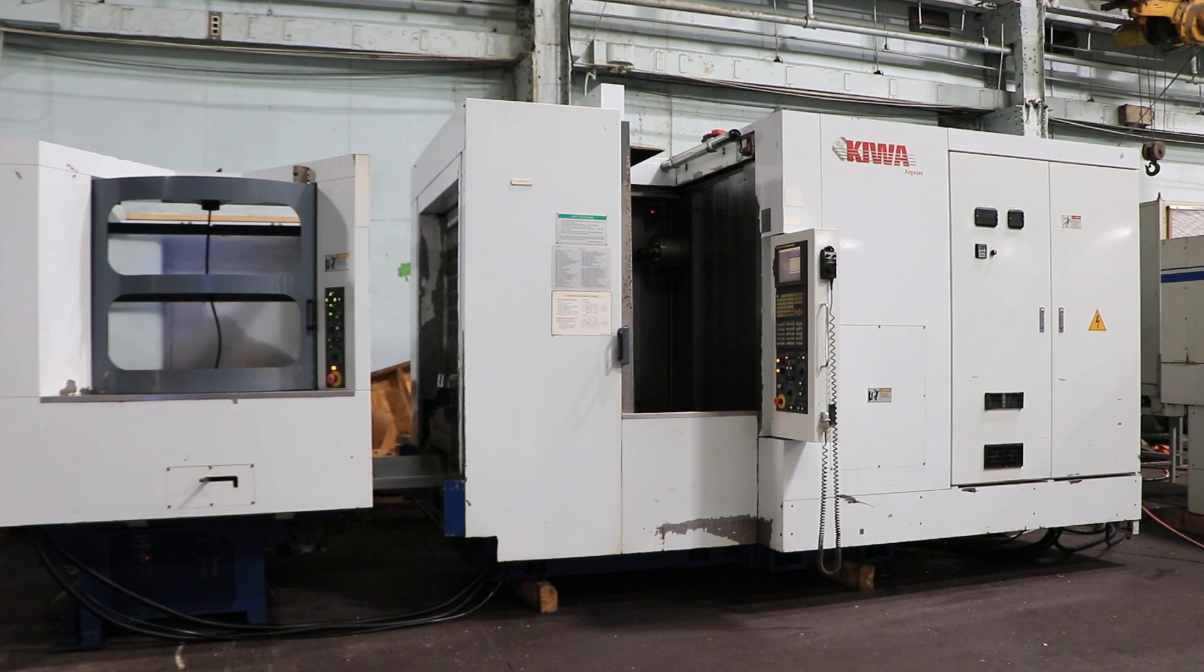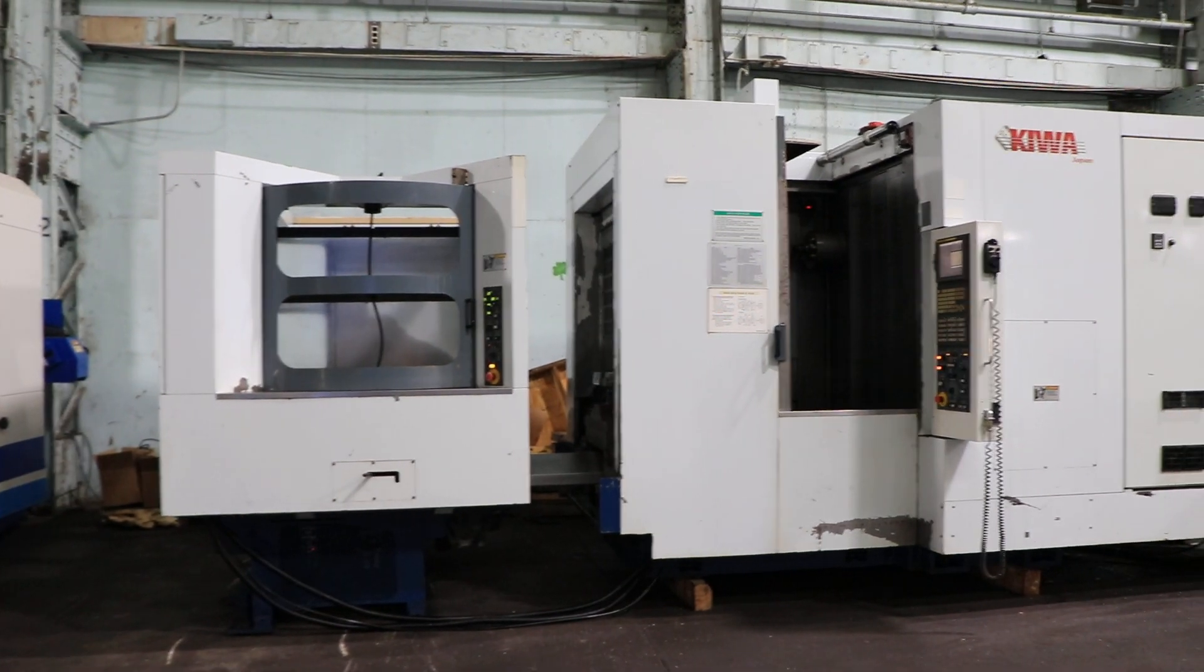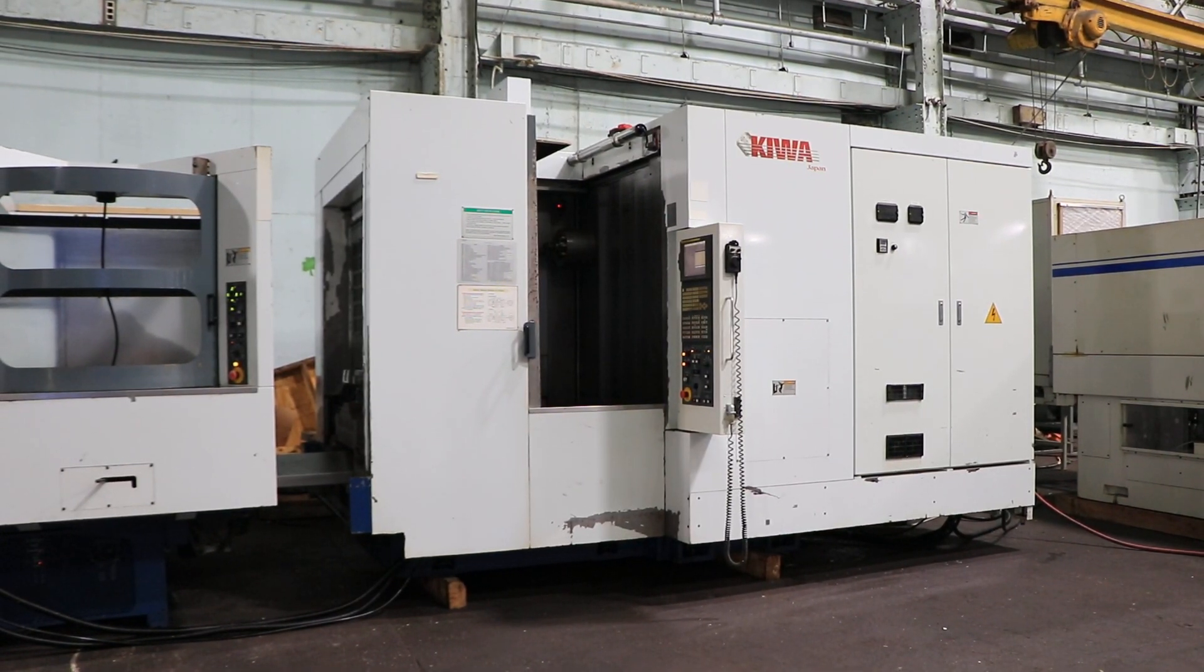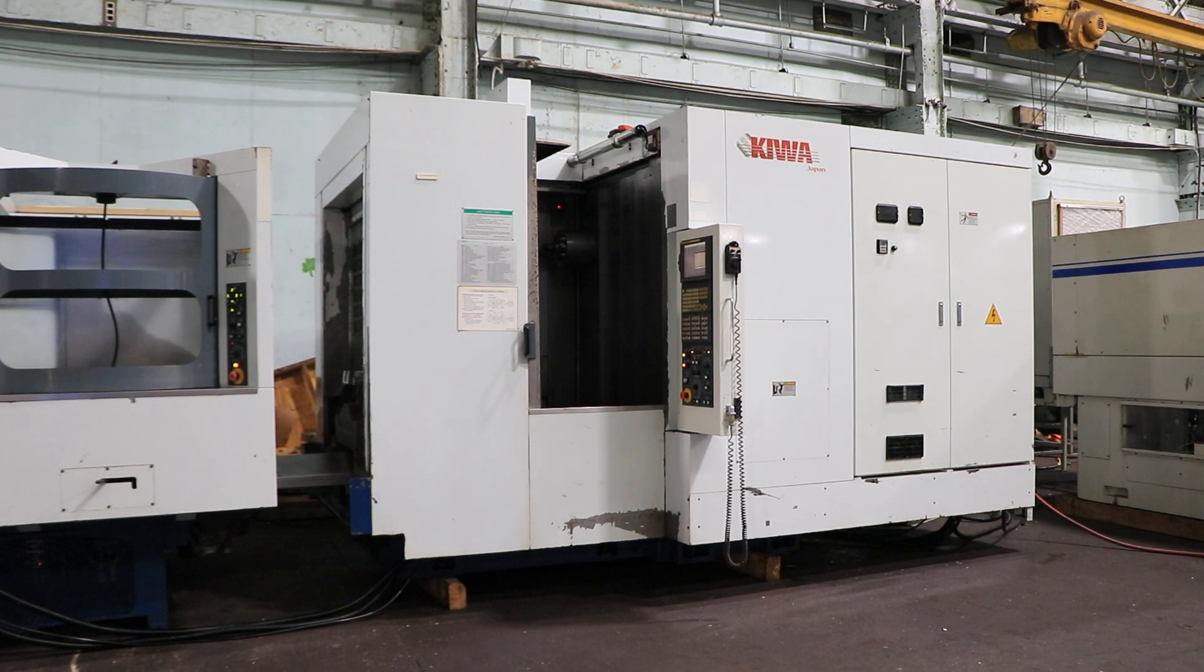Okay, we have a Kiwa 4-axis Horizontal Machining Center, model KNH426X6APC, serial number JK7743. This machine was new in 2002 and we're going to run it for you.